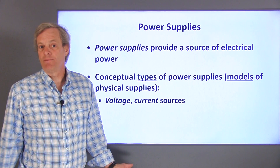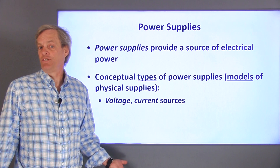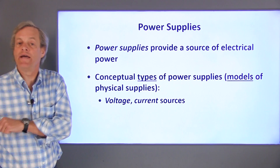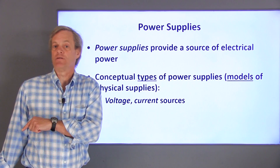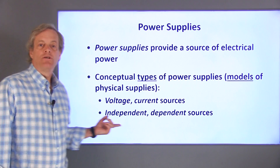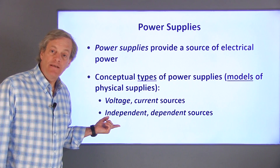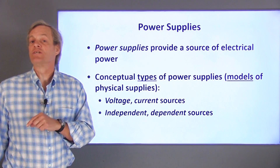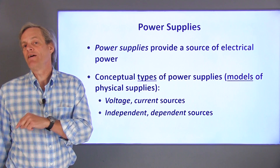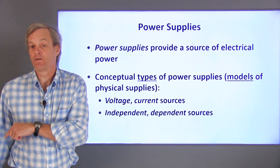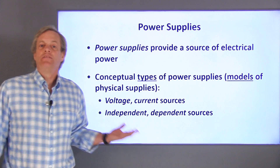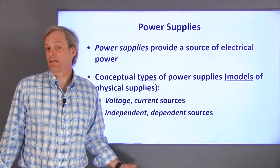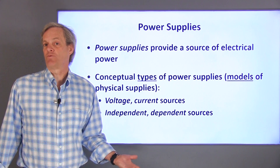Batteries, for example, are generally represented as voltage supplies, since their voltage remains constant over a fairly wide range of currents. Sources can also be categorized as either independent or dependent. Dependent sources provide power that's controlled by a voltage or current elsewhere in the circuit that they're powering. On the other hand, independent sources are not directly controlled by the voltage or current elsewhere in the circuit.